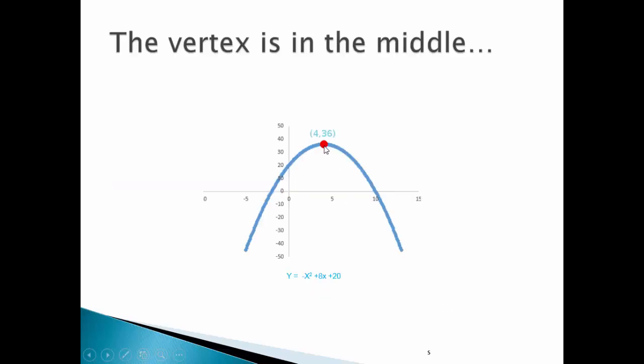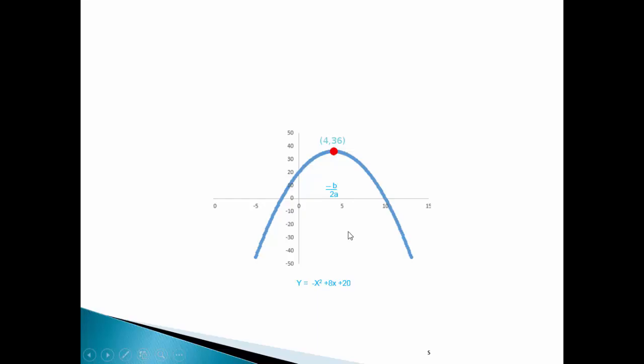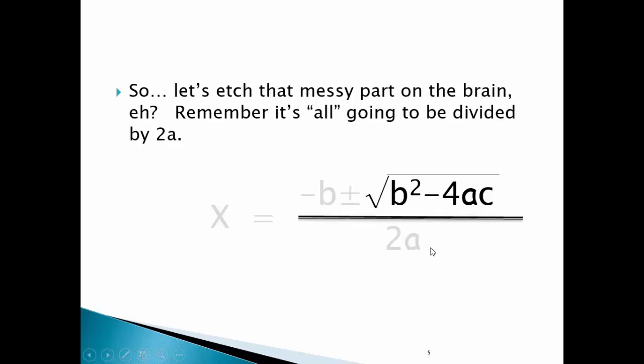The vertex is in the middle. Negative b over 2a. Negative 8 divided by negative 2, 4. The x for this point is the vertex minus the messy part, and that point is the vertex x plus the messy part. So let's etch the messy part on the brain.